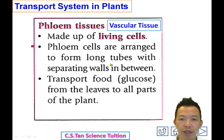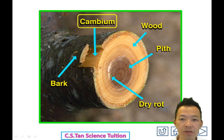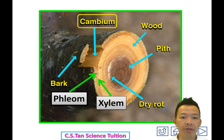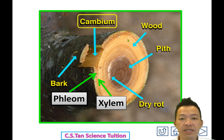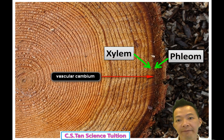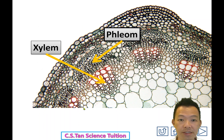Where are the xylem and phloem tissues? Under the tree bark 在樹皮下面, xylem and phloem tissue are somewhere around here. The xylem tissue is on the inside facing inward, and phloem tissue is just outside facing outward 就躲在外面. These two form the vascular tissue 形成血脈組織.